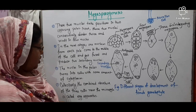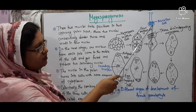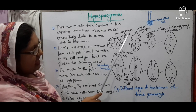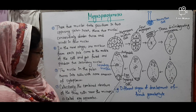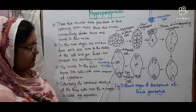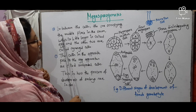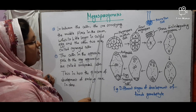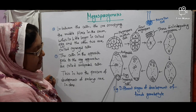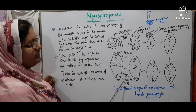Collectively, the three cells near the micropyle are called the egg apparatus. Among these three cells, the one occupying the middle place — which is a little larger — is called the egg, and the other two cells are called synergid cells. These three are combinedly known as the egg apparatus.